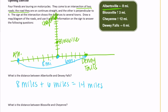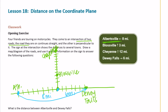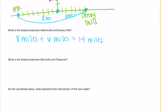What's the distance between Blossville and Cheyenne? Blossville is at 3 miles and Cheyenne is at 12 miles. To get from here to here, we do 12 minus 3, which gives us 9 miles. So 12 miles minus 3 miles is equal to 9 miles.